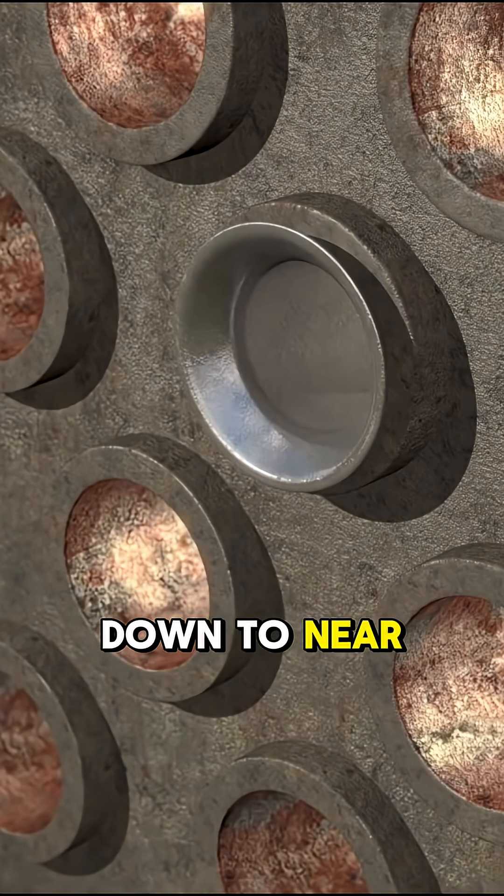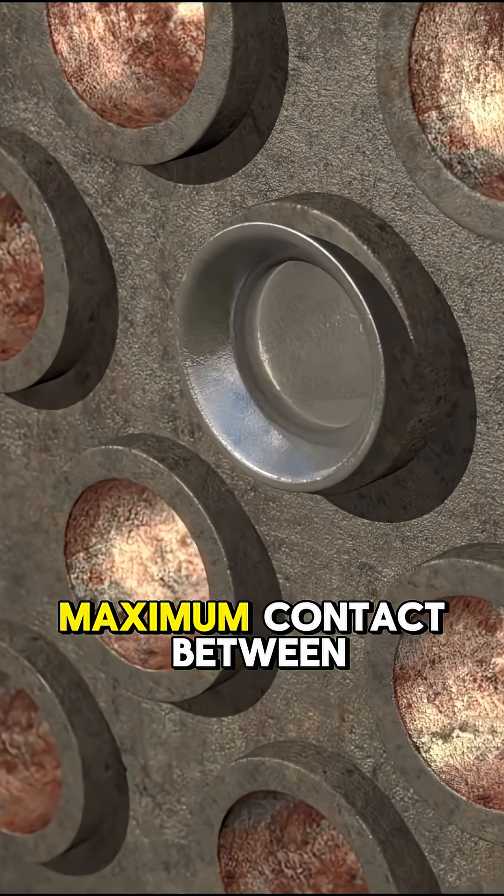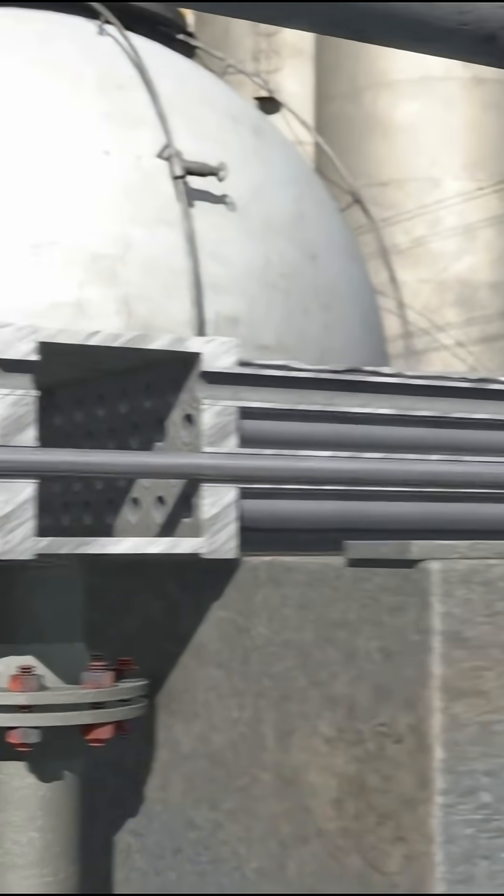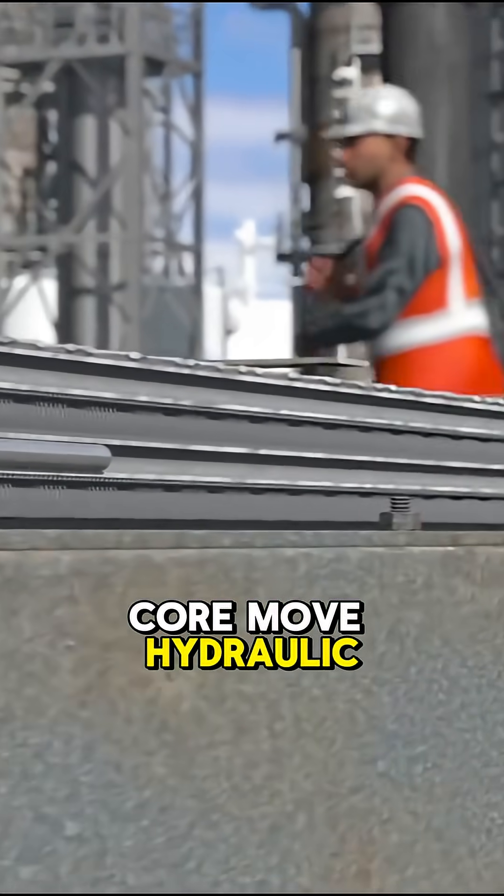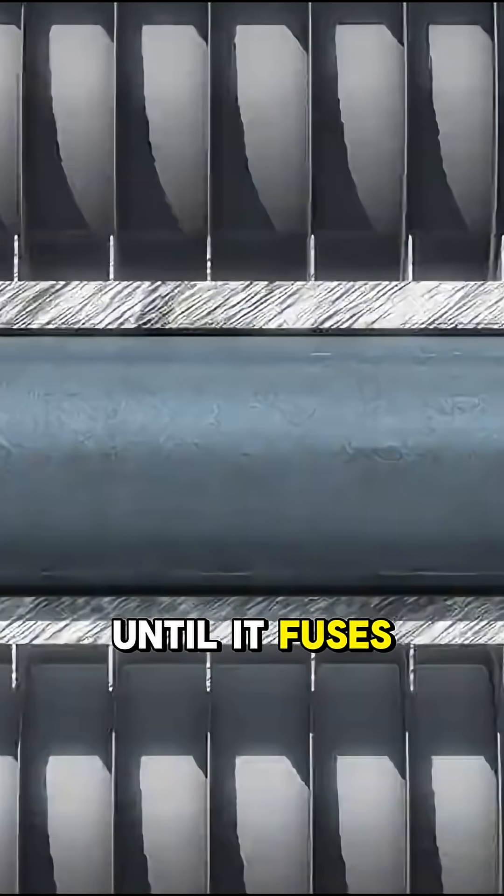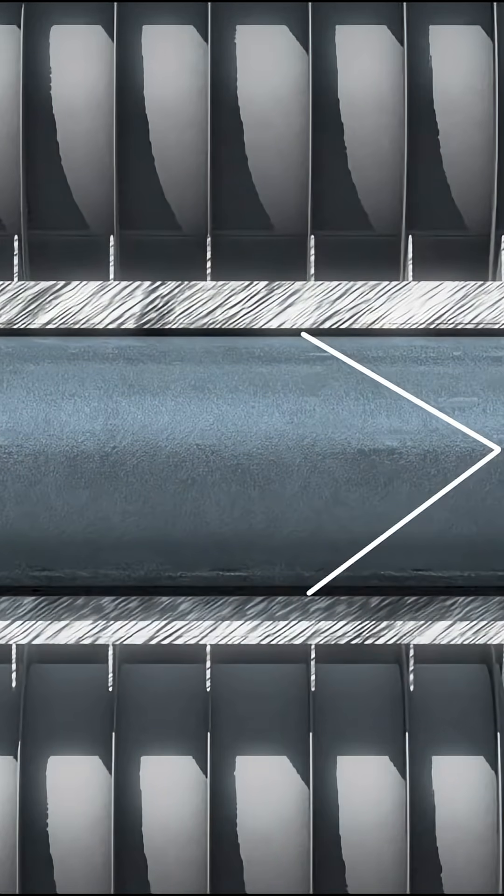Then comes the core move: hydraulic expansion. We pressurize the liner until it fuses tight to the original tube, like relining a pipe from the inside out.